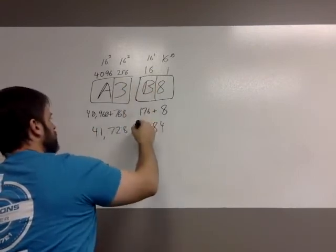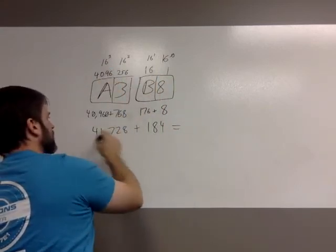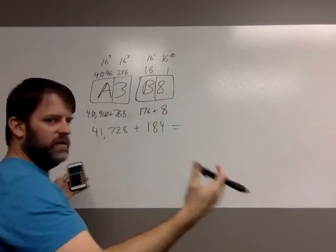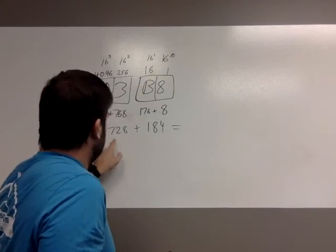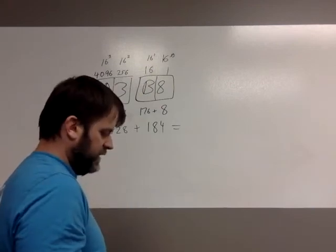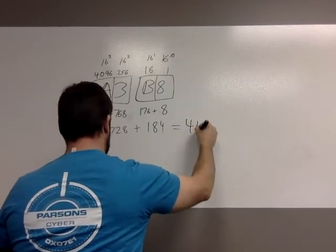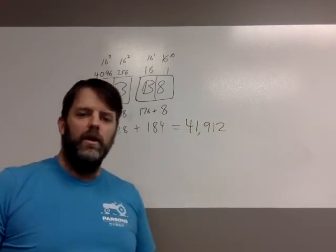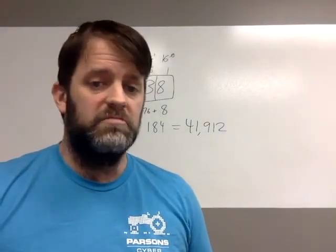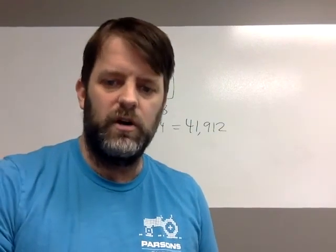And then I have to add the two bytes together. This is the value of this byte. This is the value of this byte. I'm gonna add them together since we want the value of the whole thing. And so I already have this value in my calculator. So I just add 184 to that. And the total for the whole deal is 41,912. Pretty easy. 2 byte value hex to decimal. That's not a hard thing.